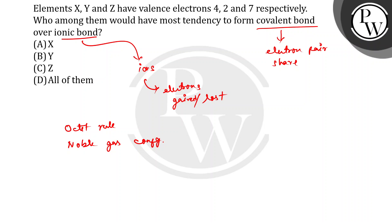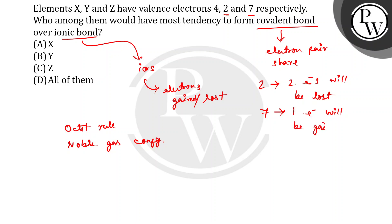Now let's look at who has two electrons and who has seven electrons. The element with two valence electrons will simply lose those two electrons to achieve an octet. The element with seven valence electrons needs to gain only one electron to complete its octet. This loss and gain makes ion formation easy for both Y and Z, so they will prefer ionic bonding.